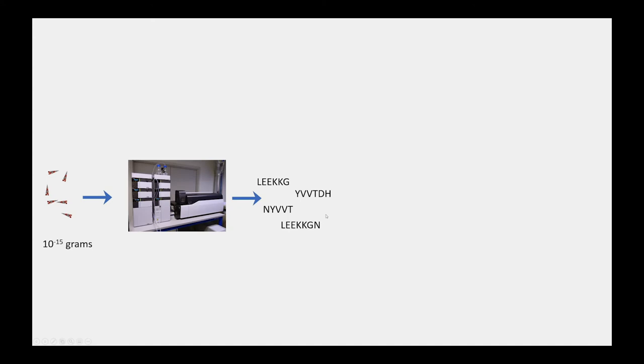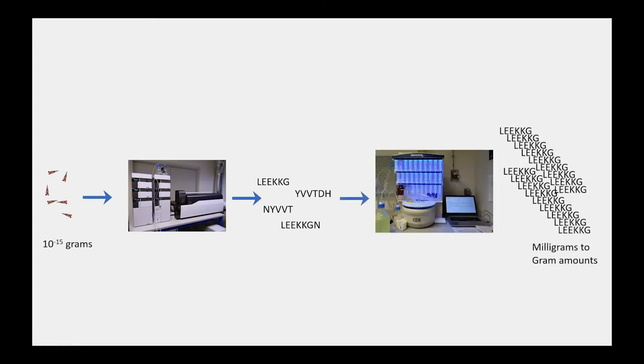Now, once we know the sequences of those peptides, we can then in turn synthesize them on the peptide synthesizer. So we're going from this information that only has femtograms, 10 to the minus 15 grams, to getting the sequence information to putting onto a peptide synthesizer. Then we can make milligram to gram quantities of that particular peptide. Once we have that much peptide, there's many, many experiments we can do.